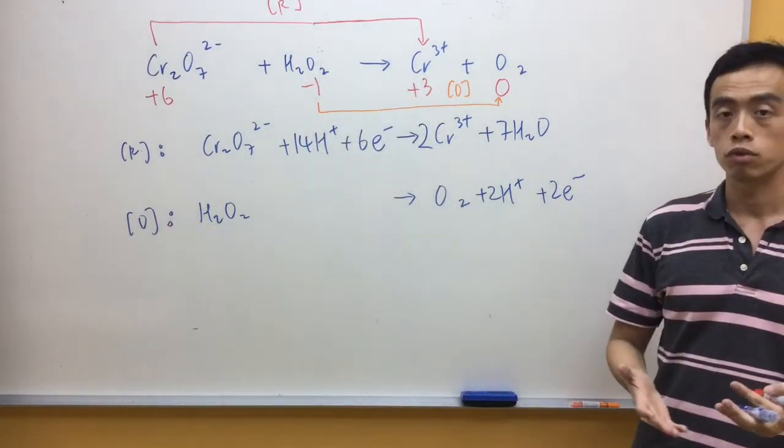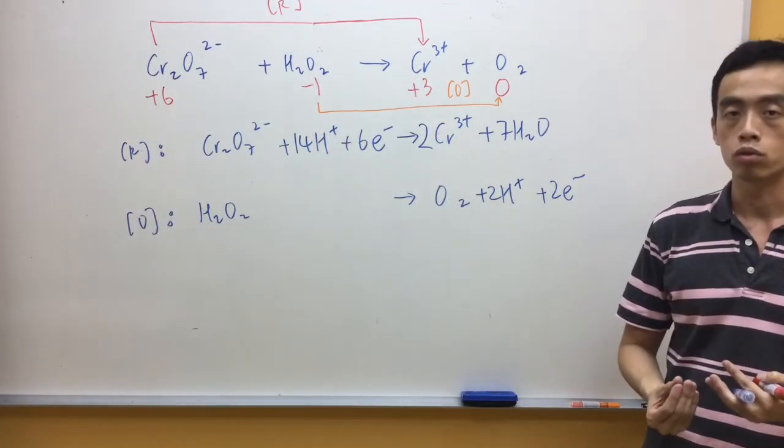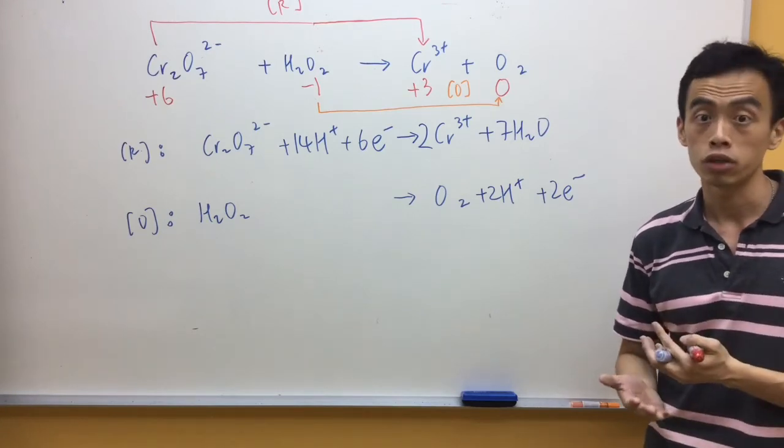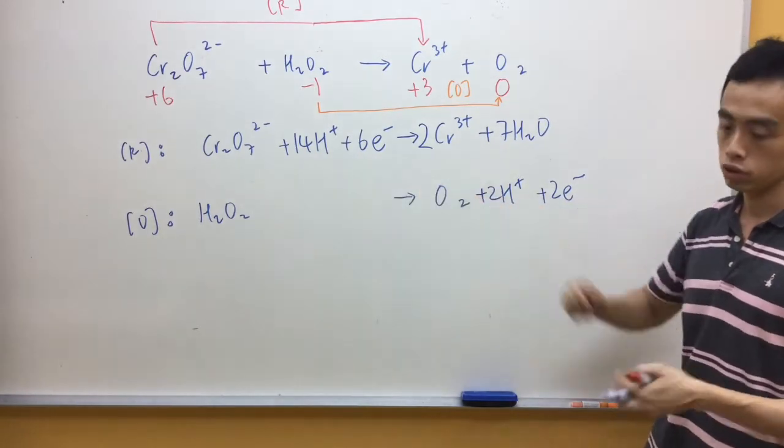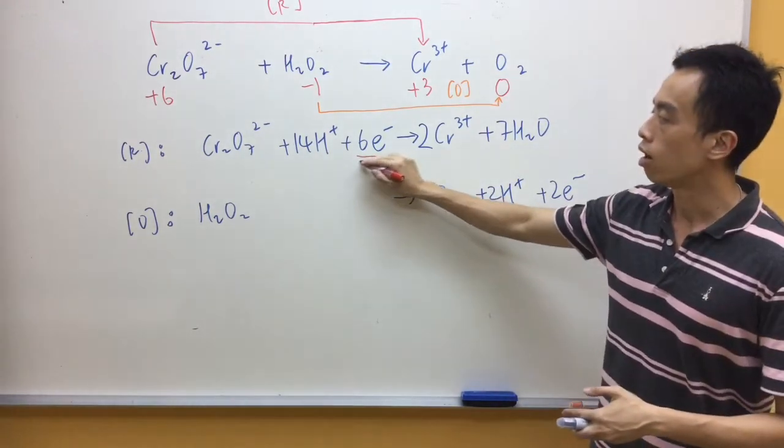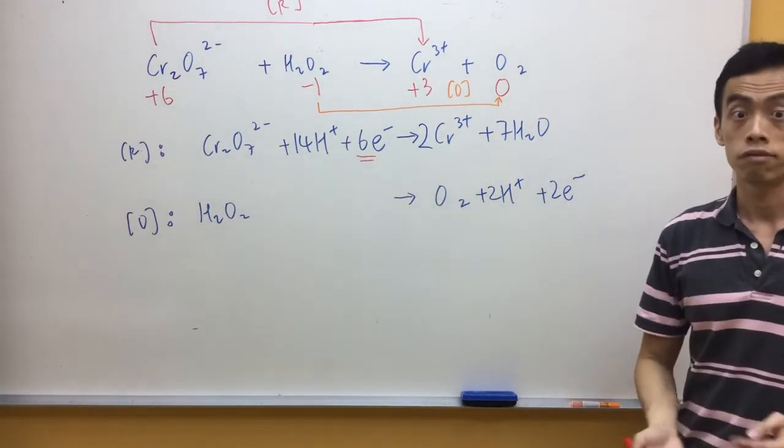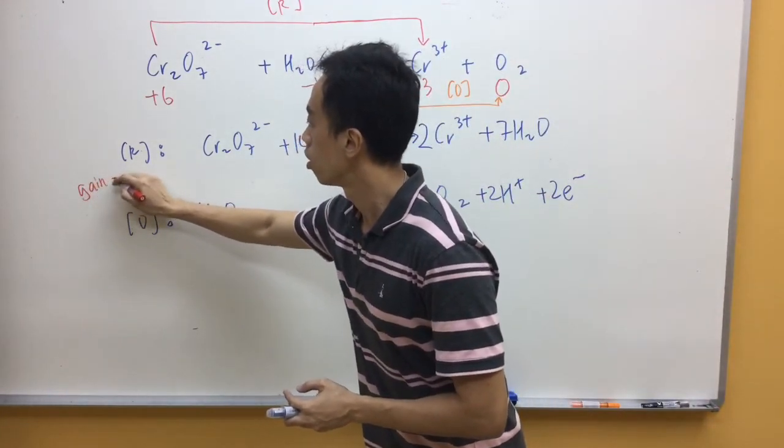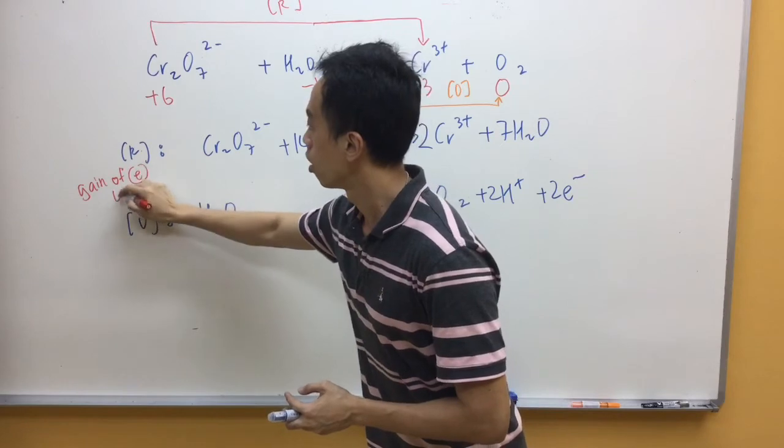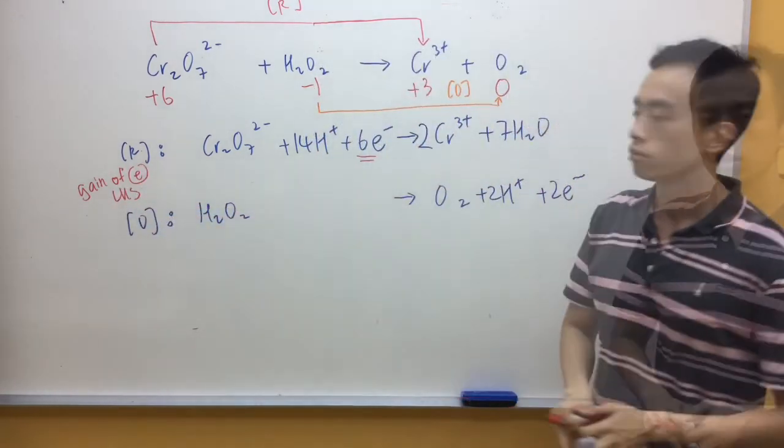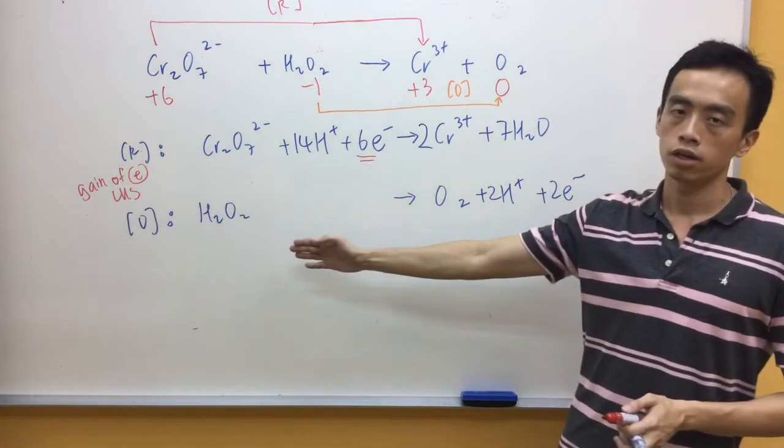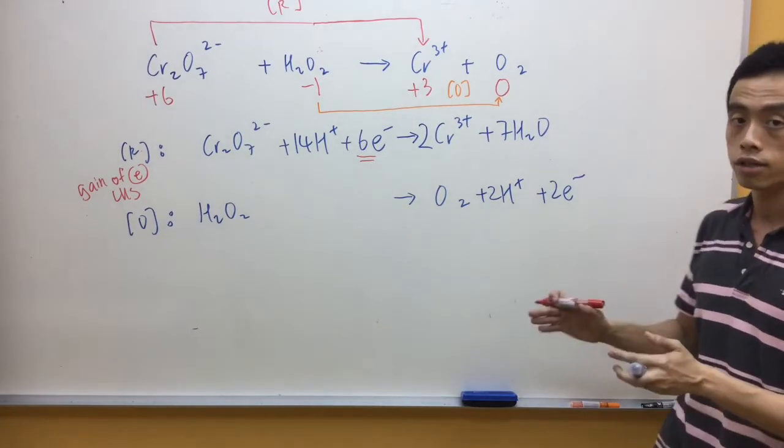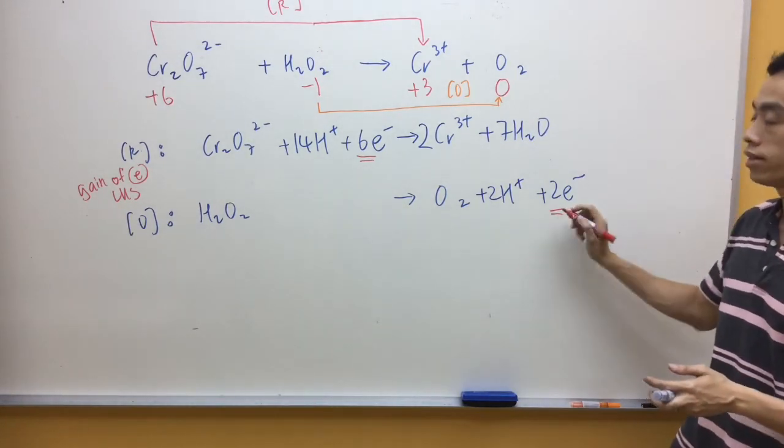Now before we add the 2 half equations together, just a concept to go through. Remember reduction is defined as the gain of electrons. So it is reflected here in this half equation. You notice the electrons are on the left hand side of my half equation. Similarly oxidation is defined as the loss of electron. So therefore you notice in this case the half equation, the electrons are on the right hand side of the half equation.